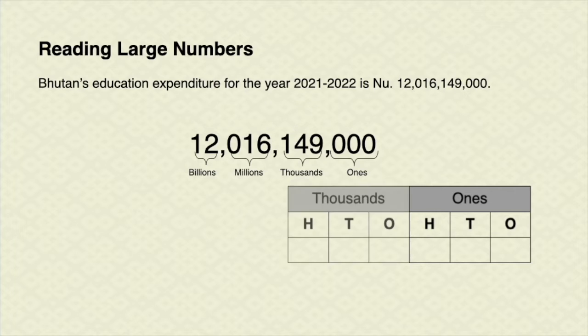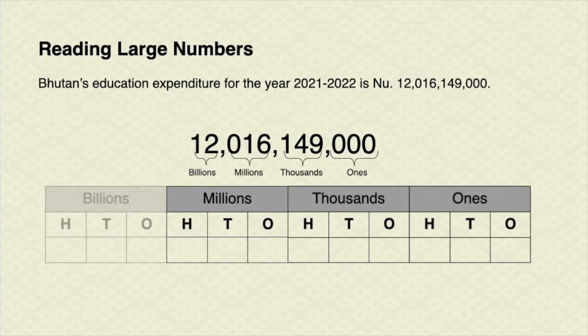Now we need to create a place value table for different periods along with digits. The digits are ones, tens, and hundreds for all the periods. Put each digit under the place value table as per their place value. Let us begin putting the number from ones period and go till the billions period.